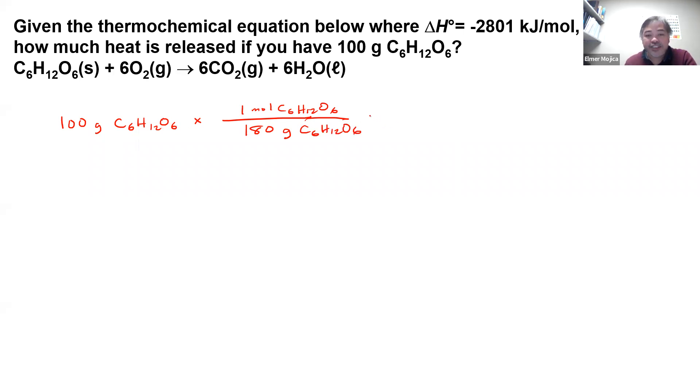And we all know that the amount of energy that is released is for every one mole of C₆H₁₂O₆, that's 2,801 kilojoules. You don't need to put the negative sign. It's understood that the sign tells you only if it's absorbed or released. It's negative, so that's the amount that it will release.